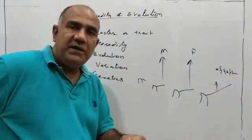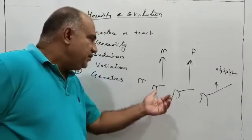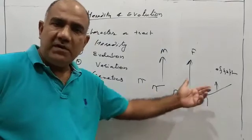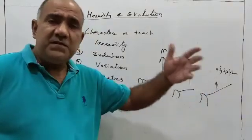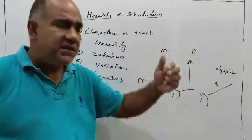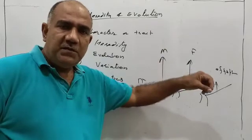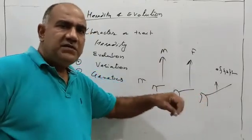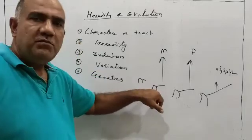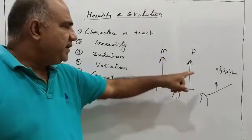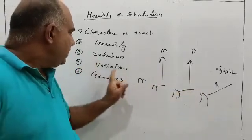Once again I will tell it for your benefit, that evolution means sequence of gradual changes. See, overnight a donkey cannot become giraffe. But for millions of years, when these variations kept on accumulating in them, origin of new species took place. So sequence of gradual changes that take place in primitive organisms for millions of years and finally results in the origin of new species. That is called evolution and variation.